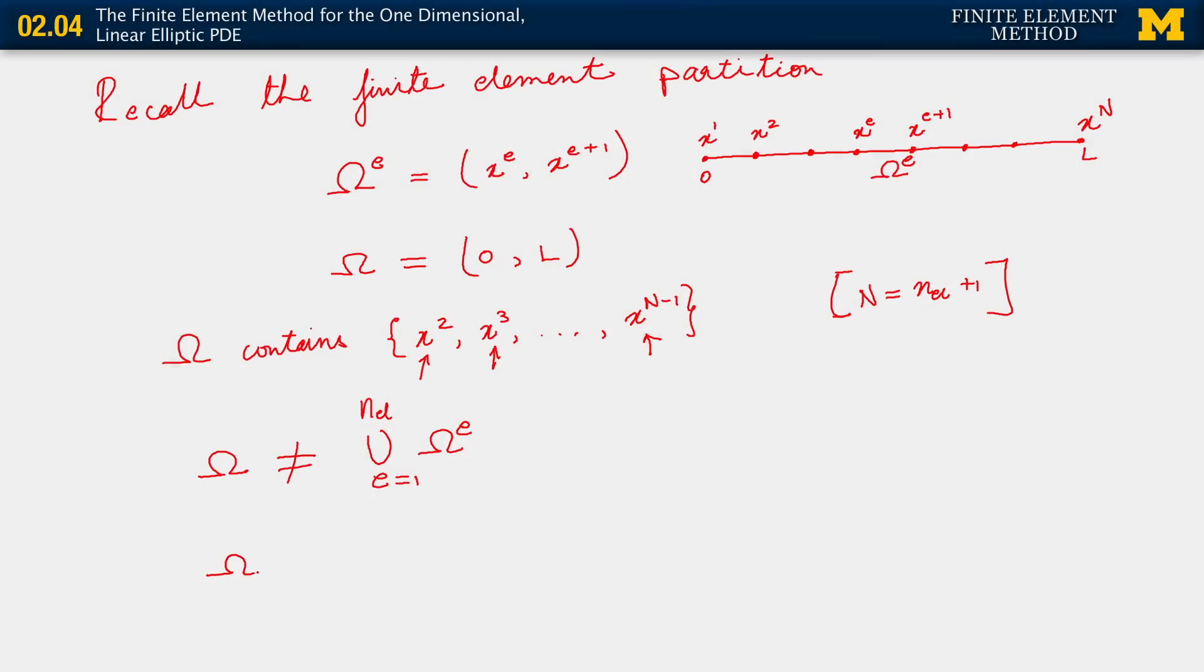The only way we can relate omega to a union of the omega e's is to make sure that we pick up all the nodal points. The nodal points, by the way, are otherwise referred to as the limit points of the corresponding open sets. So the way we can do this, however, is to say: